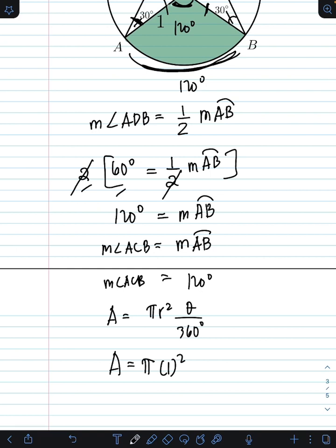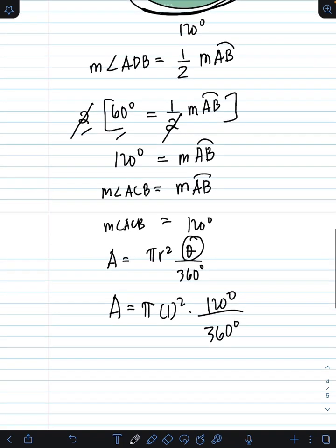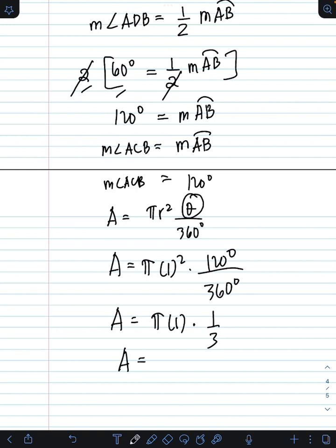So we have pi times 1 square times theta, which is 120 degrees over 360 degrees. So area now is equal to pi times 1 square, that's just equal to 1. 120 over 360, it's equal to 1 third. And the final value for the area is pi times 1 times 1 third, or pi over 3 square units. Therefore, the area of the shaded region is pi over 3 square units.